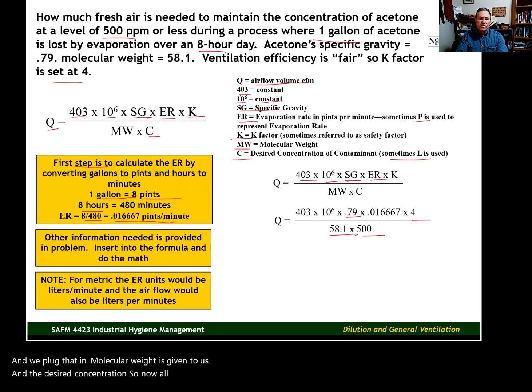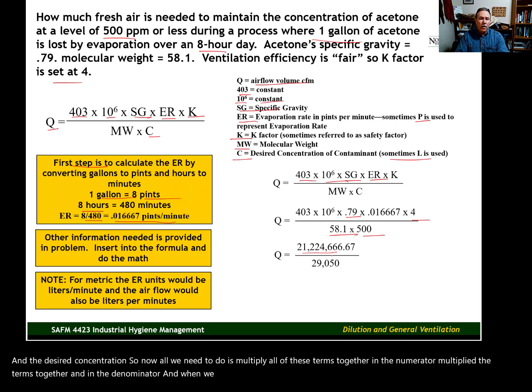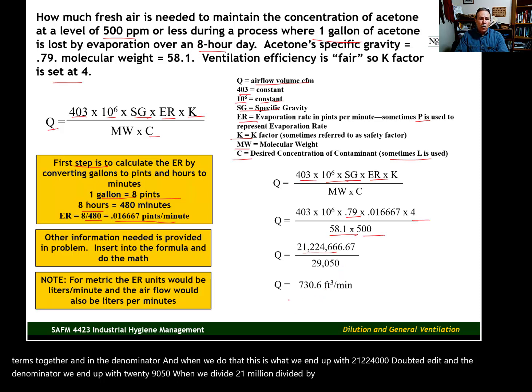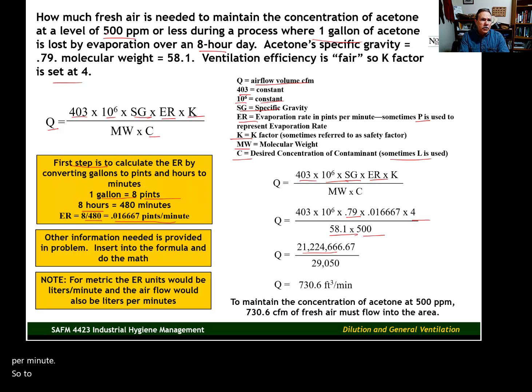So now all we need to do is multiply all of these terms together in the numerator, multiply the terms together in the denominator. And when we do that, this is what we end up with: 21,224,000 in the numerator. In the denominator, we end up with 29,050. When we divide 21 million divided by 29,050, we end up with a flow rate of 730.6 cubic feet per minute. So to maintain our concentration at 500 parts per million, we're going to need 730.6 cubic feet per minute of fresh air.